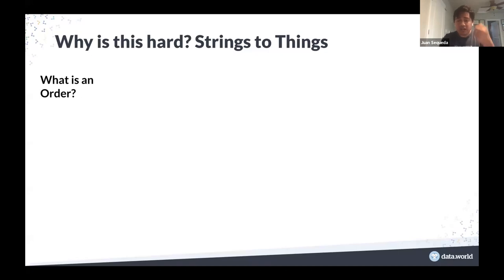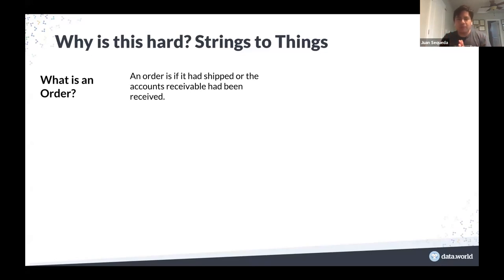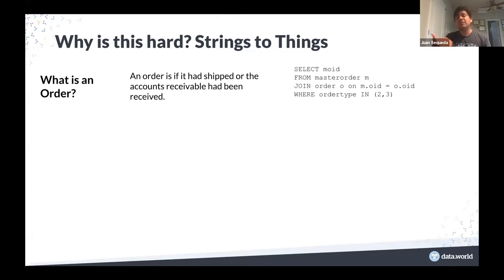Here is why this is hard. When we think about what is an 'order' — imagine order is a concept in my graph. Initially there were multiple definitions of order. After discussion we come to a consensus on a definition — this is still in words. I need to ground this in the data. What are the actual semantics? You realize that this is the particular SQL query that will return everything that is an order, the unique identifiers for an order. You have to know, for example, that order_type values 2 and 3 are the ones we need.